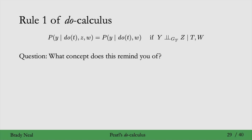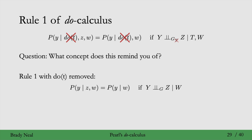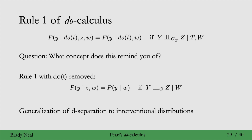So that's rule one, which tells us when we can remove z from behind the conditioning bar. What concept does this remind you of? If we remove these do(t)'s and change the graph to just g — i.e., t is the empty set — this is just regular d-separation, and it implies conditional independence in the distribution given the Markov assumption. So rule one is just a generalization of d-separation to interventional distributions.